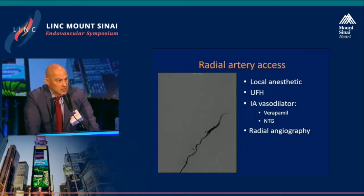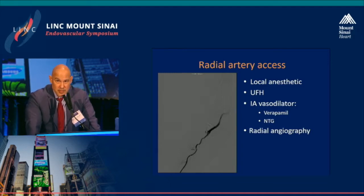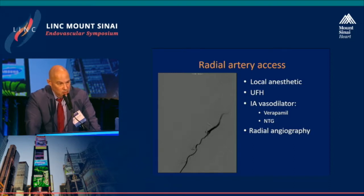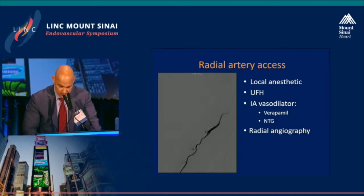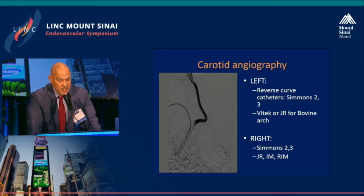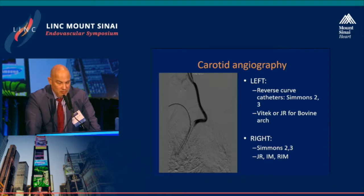Radial access is quite simple. We're using it more frequently in the cardiac catheterization laboratory, particularly for coronary interventions. We apply local anesthetic over the radial artery, use micropuncture to access the radial, anticoagulate with unfractionated heparin, give vasodilators, and proceed with radial angiography, and then engage the carotids.